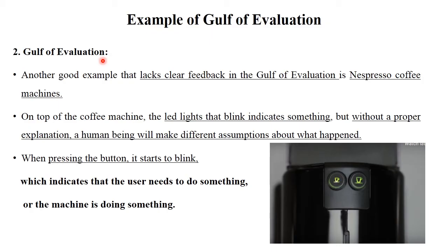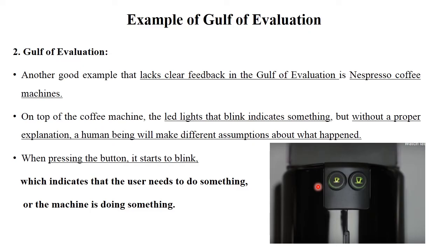The next example is the gulf of evaluation, which means a lack of clear feedback. This is a Nespresso coffee machine. Two types of lights blink on this machine, indicating something, but without a proper explanation human beings make different assumptions about what is happening. There is no proper information on how to use the machine or what these lights indicate. The user gets confused about what they should do or what the machine is doing. Proper guidelines and principles are not provided — this is the gulf of evaluation.